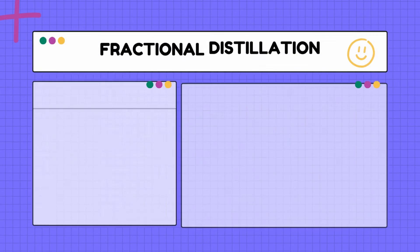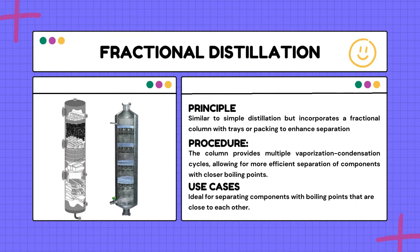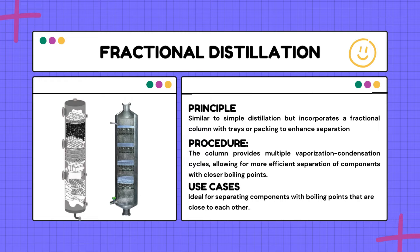The next type is fractional distillation. Fractional distillation is a technique used to isolate different components in a liquid based on their distinct boiling points. It builds upon the principle of simple distillation but adds a fractionating column to enhance the precision. Think of fractional distillation as a bigger and more advanced version of simple distillation, where the fractionating column adds a layer of complexity and precision.